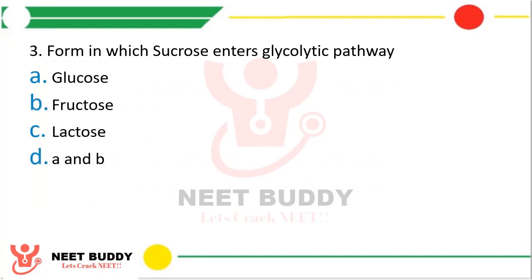Question 3: The form in which sucrose enters the glycolytic pathway is — option A glucose, option B fructose, option C lactose, or option D A and B. The correct answer is option D — it can enter as glucose as well as fructose. Sucrose is a disaccharide of glucose and fructose, so it first breaks down into glucose and fructose, and both these monosaccharides can enter into the glycolytic pathway.